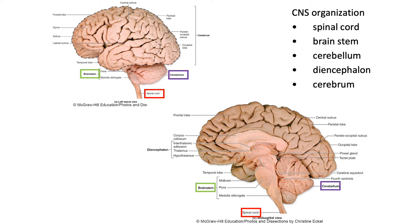Following that we have the cerebellum at the back of the brain, and then the diencephalon, which can only be seen internally and is comprised of structures such as the thalamus and the hypothalamus. And then finally we have the cerebrum, which makes up the majority of mass and volume of the brain, comprised of the cortex — that outer folded area — and then that inner folded area. Now a lot of these structures show bilateral symmetry, so there's a mirror image left and right portion of those structures, such as with the thalamus.